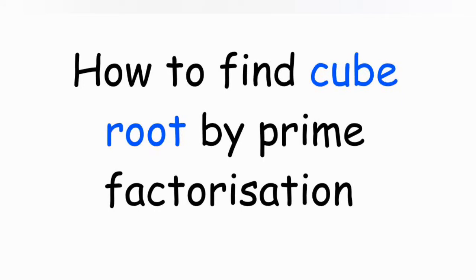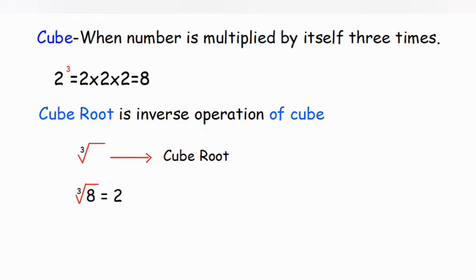Hello everyone, today we're going to find out cube root by the prime factorization method. But before that, let's understand what a cube and cube root are. A cube means when you multiply a given number three times — for example, two cubed: two into two into two gives us eight.